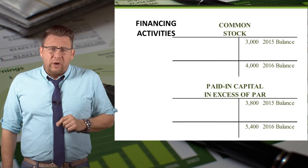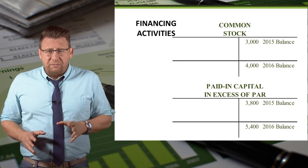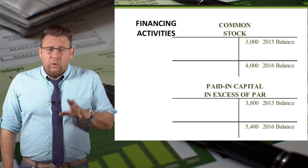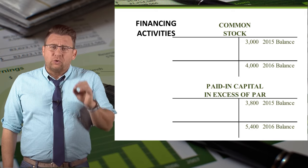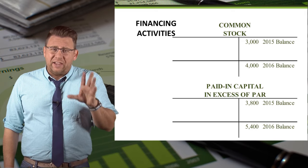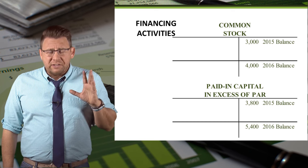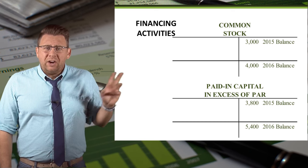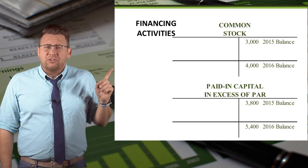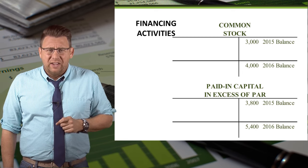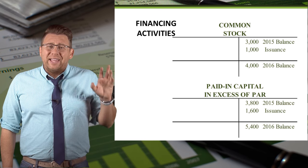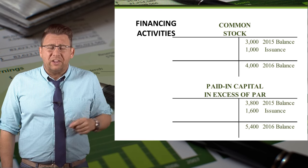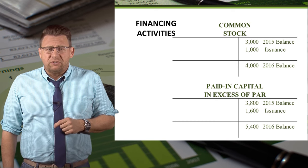You may encounter questions where you're not given all of the additional financial data needed. When this happens, I strongly encourage you to write out the T-accounts with the data that you do know, and then start solving for what you weren't given. Here I've listed the beginning and ending balances related to common stock, so I can solve for the missing amounts and determine that the total stock issuance was $2,600.